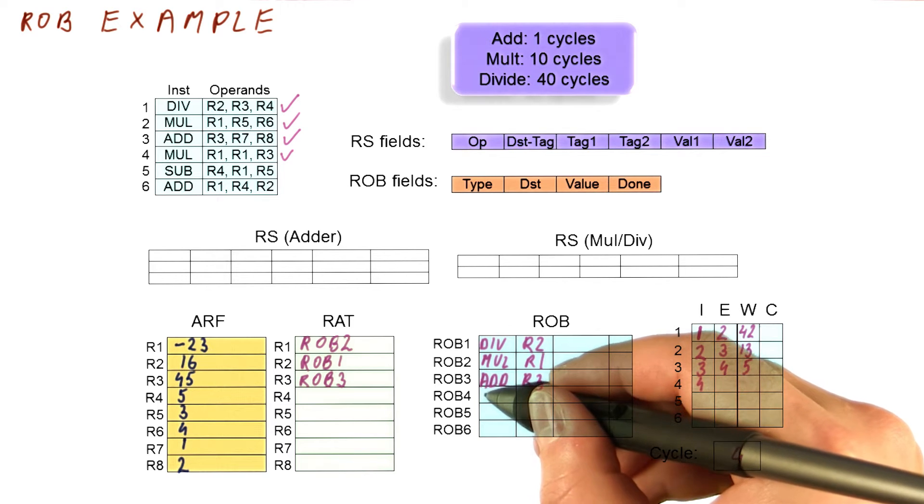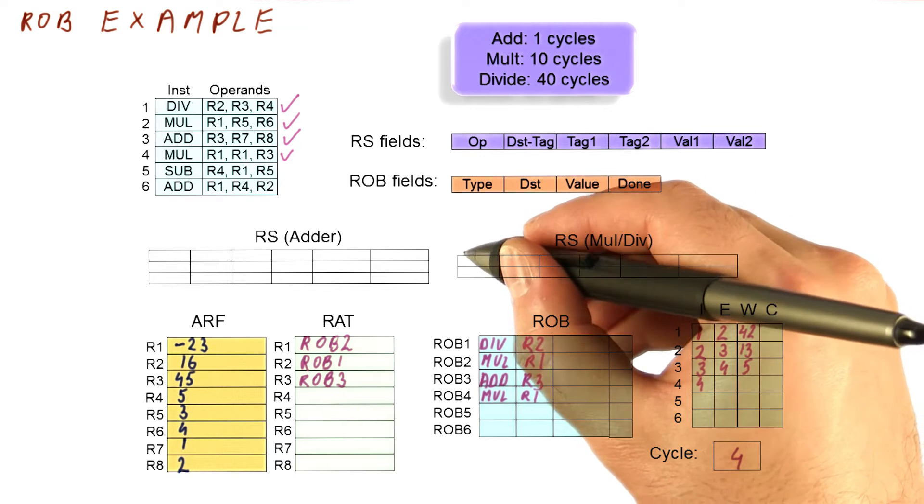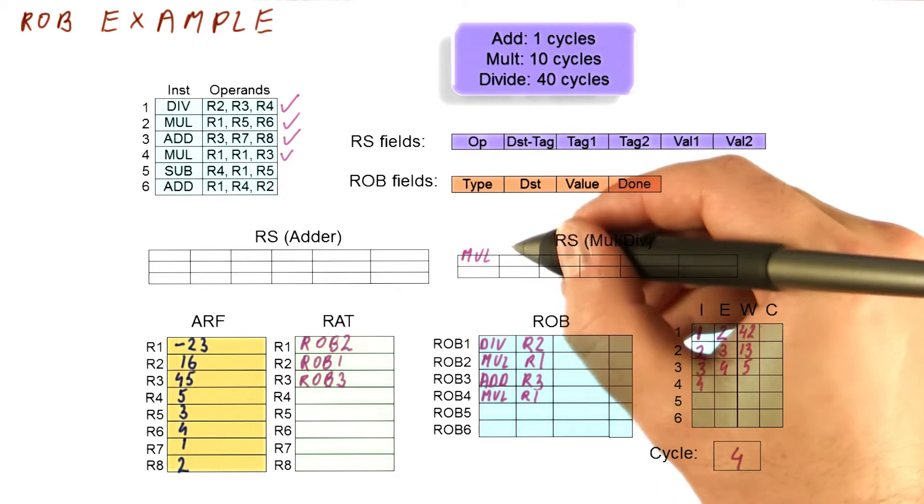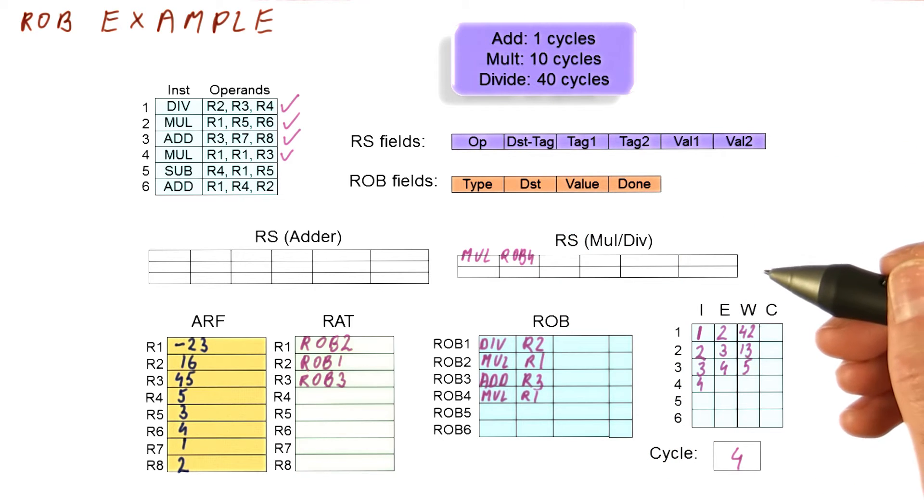It's going to take this ROB entry. It will write to r1 so we remember that. We take also a reservation station. We say that we are going to be broadcasting rob4 when we do this.